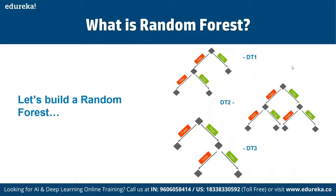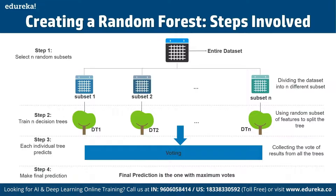We build a complete Random Forest by combining multiple decision trees. First, we create decision trees using bootstrap datasets. Since we are making a Random Forest, we don't consider the entire dataset — we divide it into N different subsets, build a decision tree for each subset using a random subset of features, make predictions from each individual tree, collect votes from all decision trees, and the final prediction is the class with the maximum number of votes.